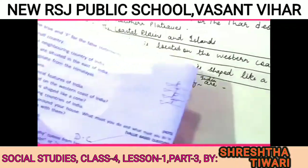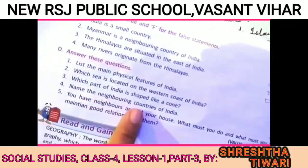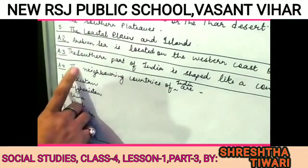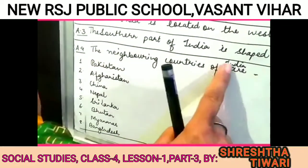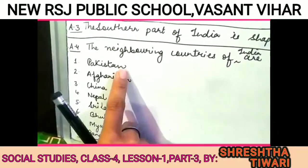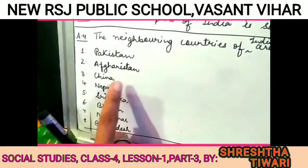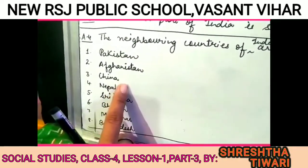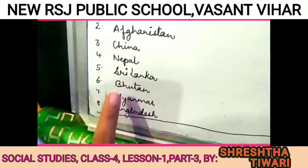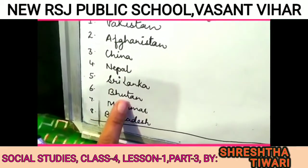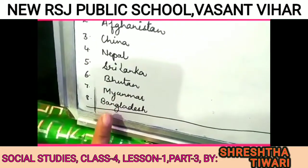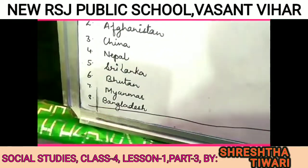Then question number four: name the neighboring countries of India. The neighboring countries of India are: number one, Pakistan; number two, Afghanistan; number three, China; number four, Nepal; number five, Sri Lanka; number six, Bhutan; number seven, Myanmar; number eight, Bangladesh.